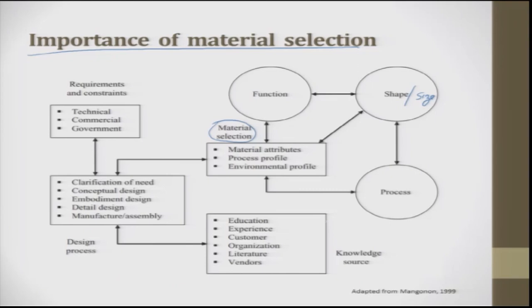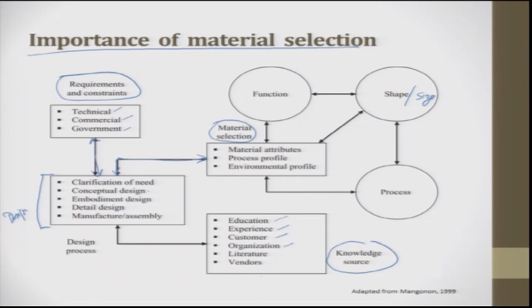Requirements and constraints come from customers — technical, commercial, and government constraints — which lead to clarification of need, conceptual design, embodiment design, detail design, and manufacturing design. These are in turn linked with material selection and material attributes. Knowledge sources include education, experience, customer, organization, literature, and vendor — essentially the voice of the customer as discussed in QFD. This schematic diagram integrates function, shape/size, process, knowledge, and constraints with material selection.